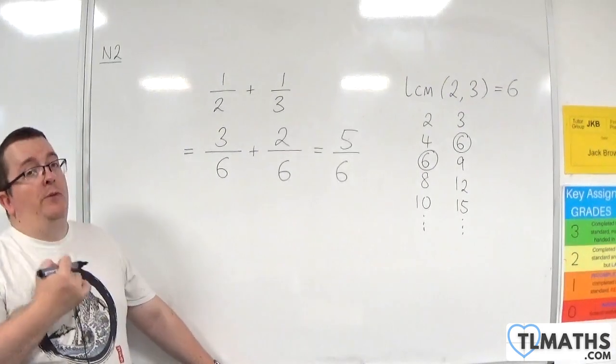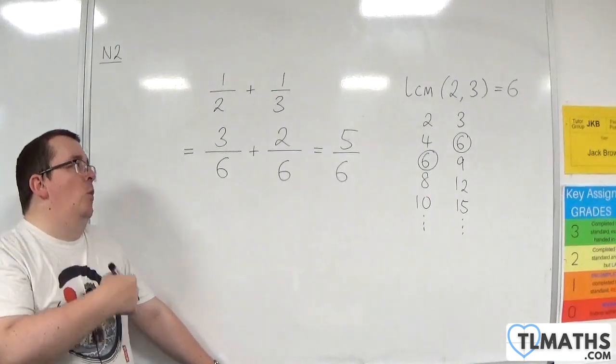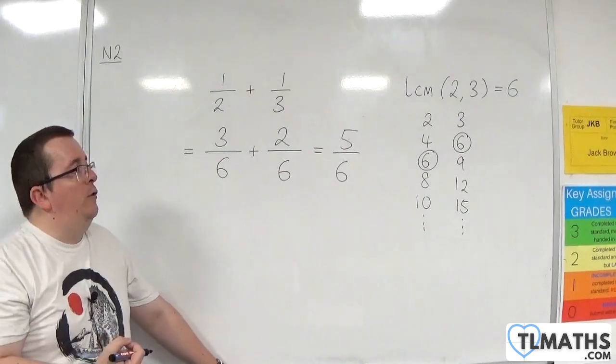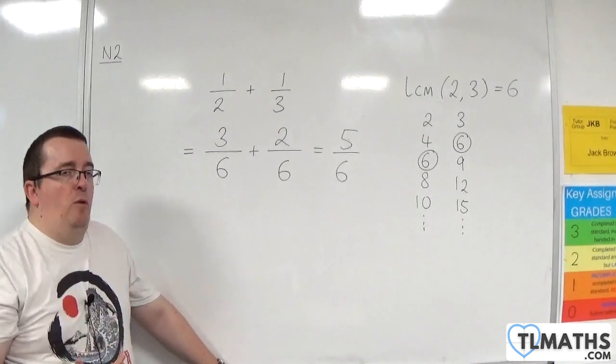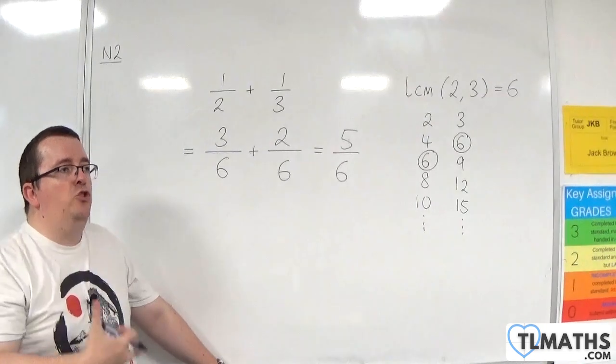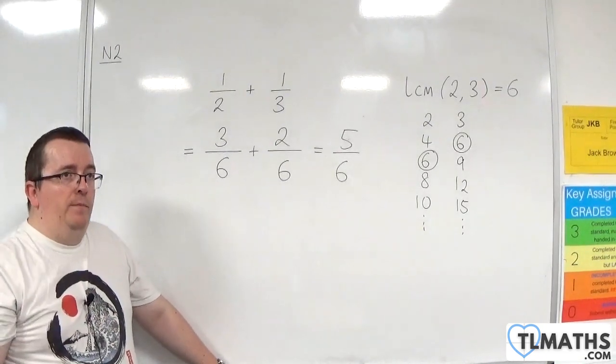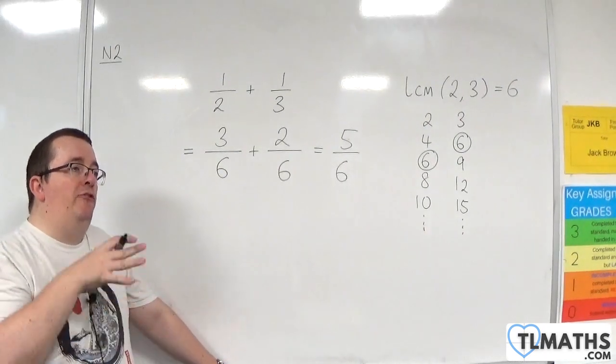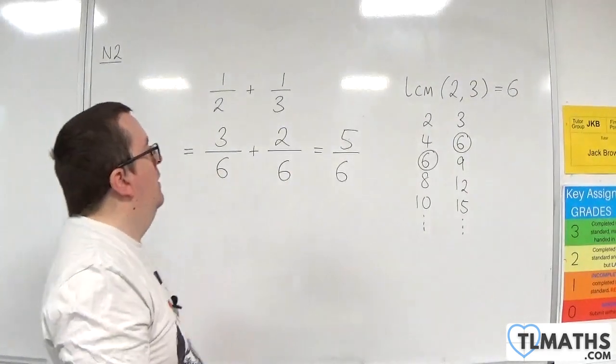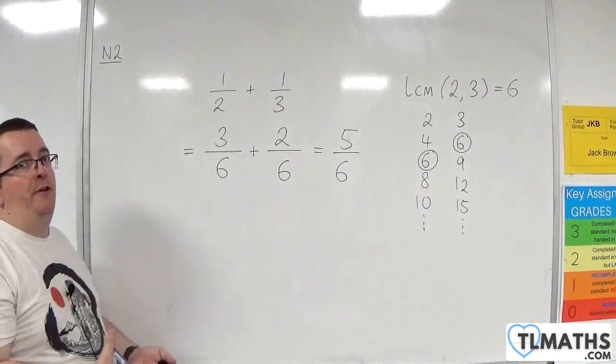Now, I said that there was a second way of really thinking about it. The second way is via something called cross multiplication. Now, there is a little bit of a problem with cross multiplication. Cross multiplication is a quite straightforward process to learn. However, sometimes you end up with a fraction at the end that needs to be simplified.